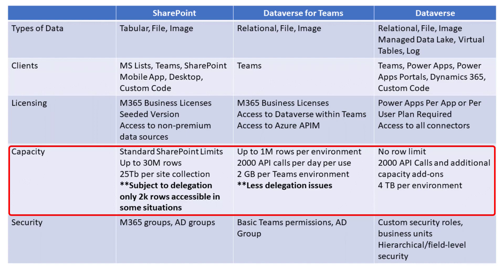With the full-fledged version of Dataverse, the API capacity limit is similar — 2,000 API calls per day per user — however, we do have the ability to purchase additional capacity. With full Dataverse, there are no row limits and we can store 4 terabytes of data per environment. So that would be a reason right there to consider moving from SharePoint or Dataverse for Teams into the full-fledged Dataverse — capacity alone. And there's also an easy path to transition your applications from Dataverse for Teams to Dataverse if you do grow out of it.